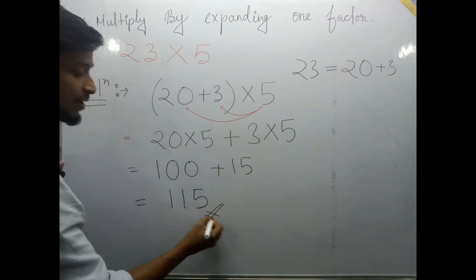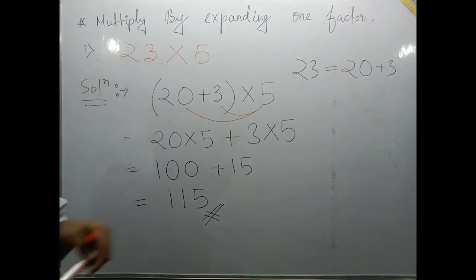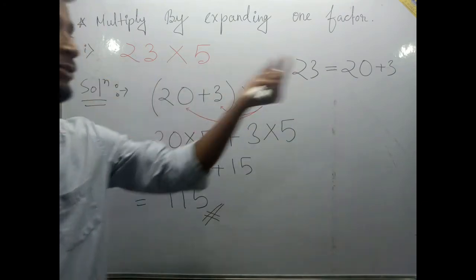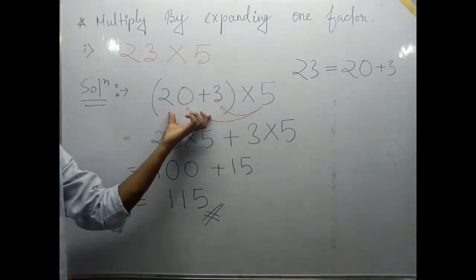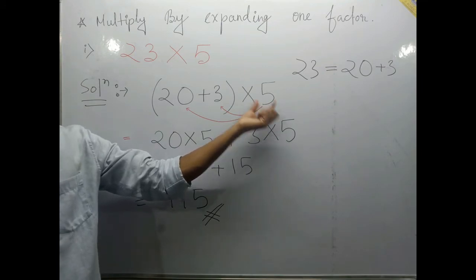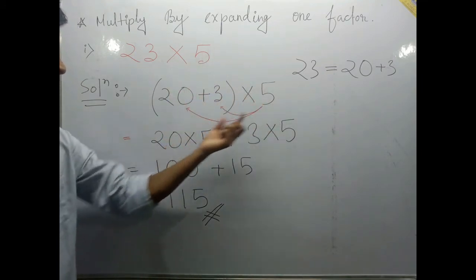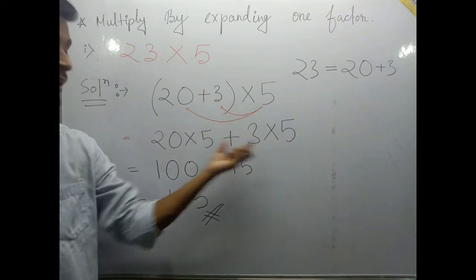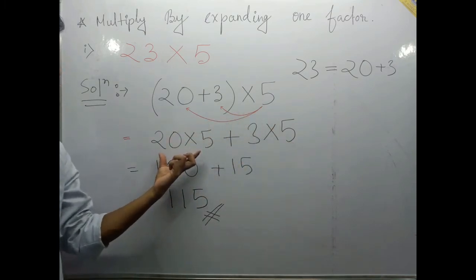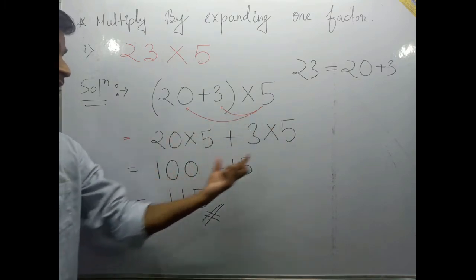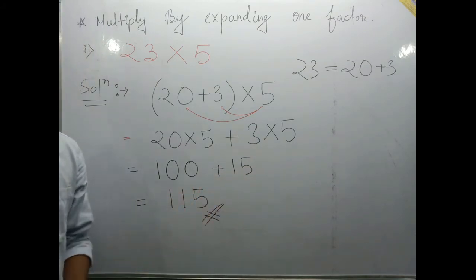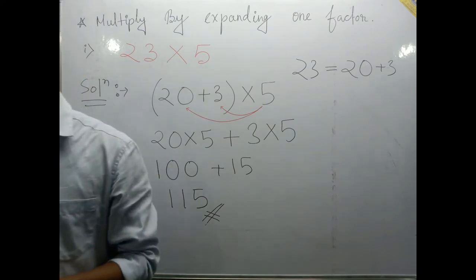And this is how we need to multiply any 2 numbers by expanding its factor. We expanded 23 as 20 plus 3, then we distributed 5 to each term: 5 into 20 and 5 into 3, which gives us 100 plus 15 equals 115. Let's take one more example.